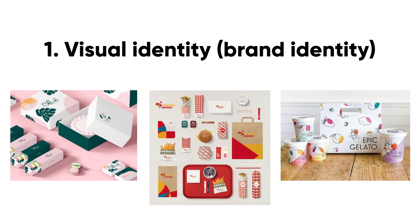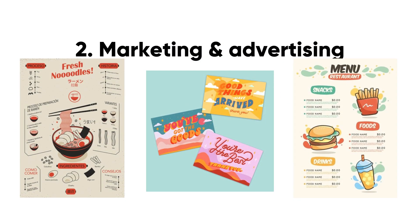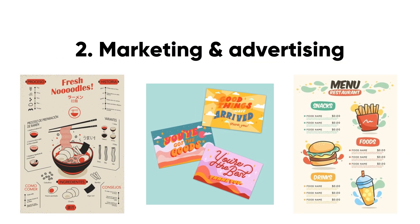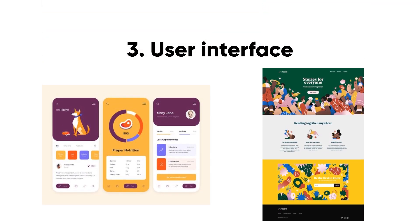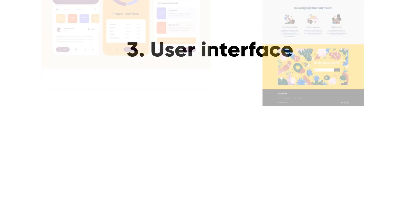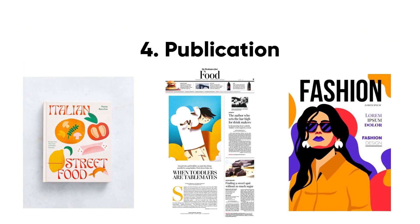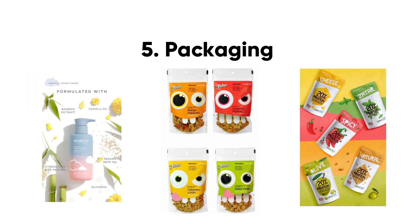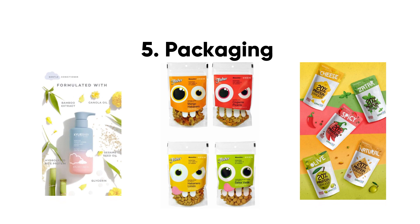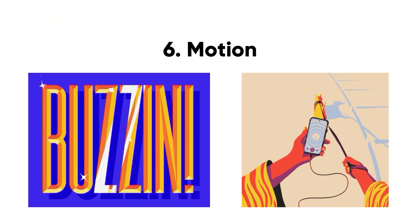Now you see the eight types of graphic design — this is a conditional division. You can go deep into one of these types or be a generalist designer, depending on your wishes. You can be a logo designer, brand designer, make advertising design, motion design, or create illustrations for books.